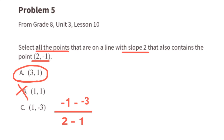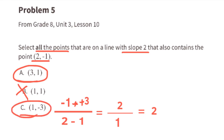Part C. Point (1, -3). Negative 1 minus negative 3 is the same as negative 1 plus 3, which equals 2. Over 2 minus 1, which equals 1. So 2 divided by 1 equals 2. Both of these points are on the same line with a slope of 2.